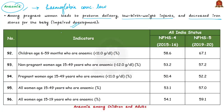Coming to the NFHS 5 survey results, childhood anemia has worsened from the previous survey period, with almost a 10% increase. Anemia among adolescent girls and women aged 15 to 49 has also worsened in the NFHS 5 period. This age bracket is important because it includes the reproductive and childbearing age of women, and we saw how anemia in pregnant women affects the child. India's poor performance in malnutrition is also caused by this anemia condition.